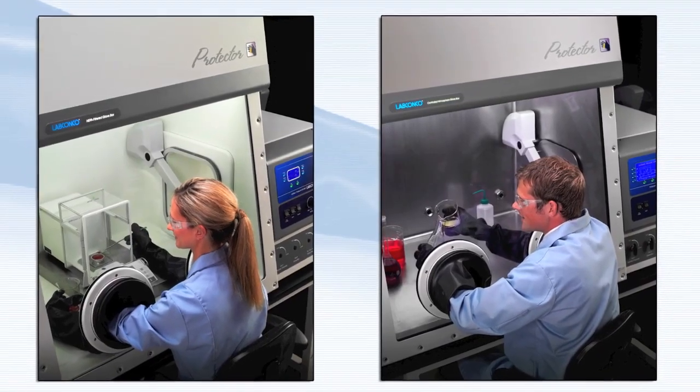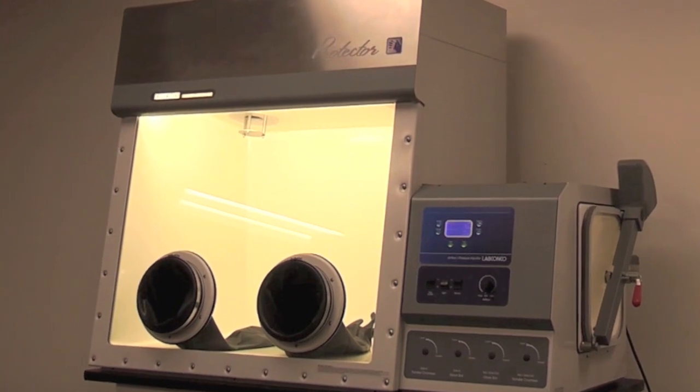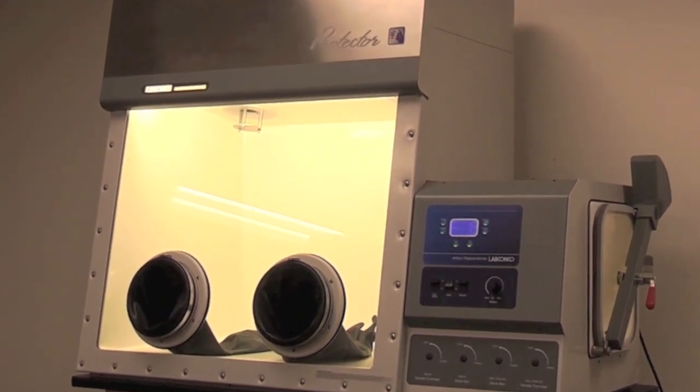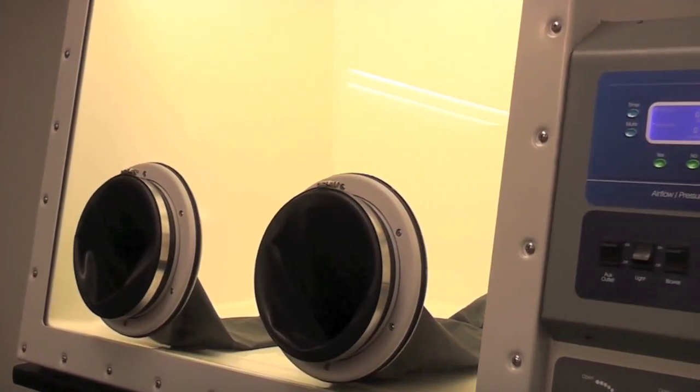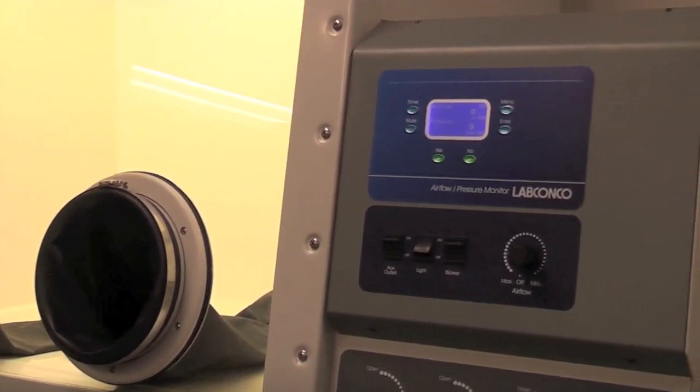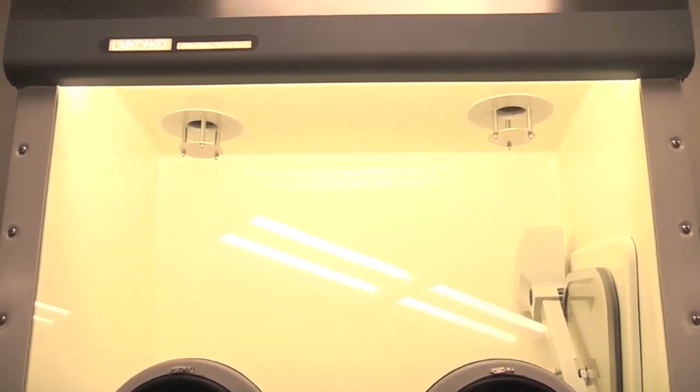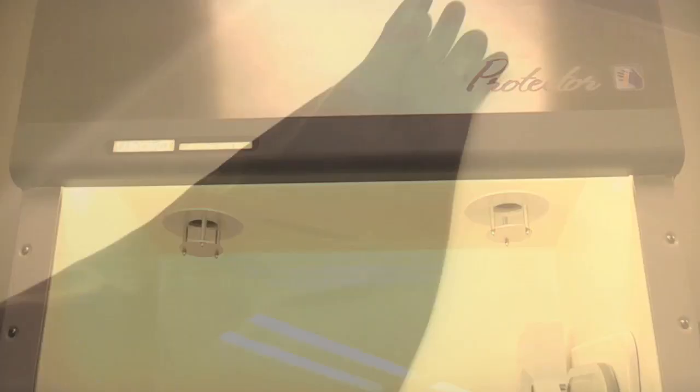LabConco's protector HEPA and ULPA-filtered glove boxes offer advanced operation features for containment and isolation systems. They provide leak-tight physical barriers protecting laboratory technicians during the manipulation of hazardous or highly potent compounds, providing maximum containment and an ISO Class 5 or better environment.